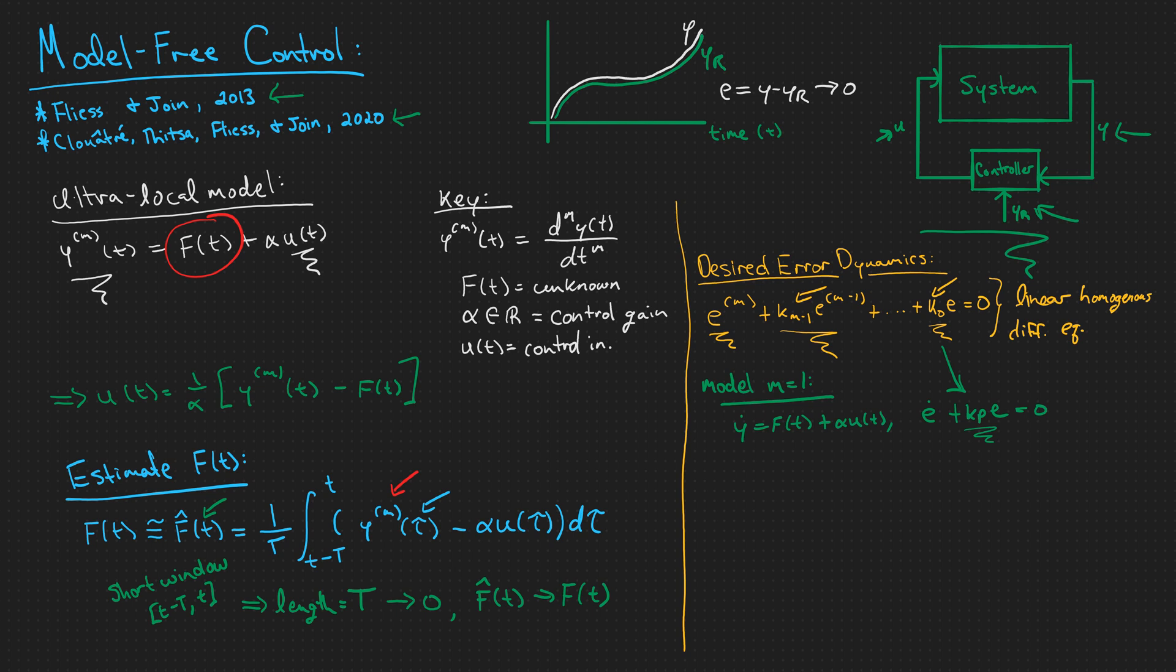Now I can expand the equation on the right to get y dot minus y sub r dot is equal to negative kp e. And this would imply that y dot is equal to y sub r dot minus kp times e. Notice that I have an equation here in terms of y dot and an equation here in terms of y dot. So I can set them equal to each other and solve for u of t.